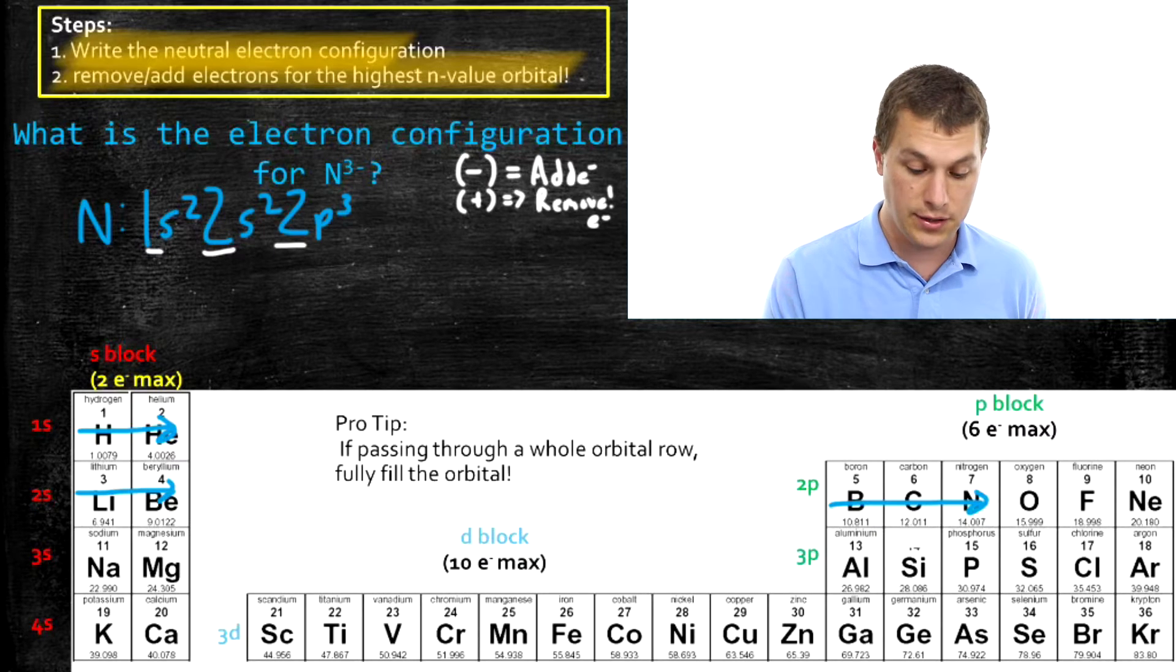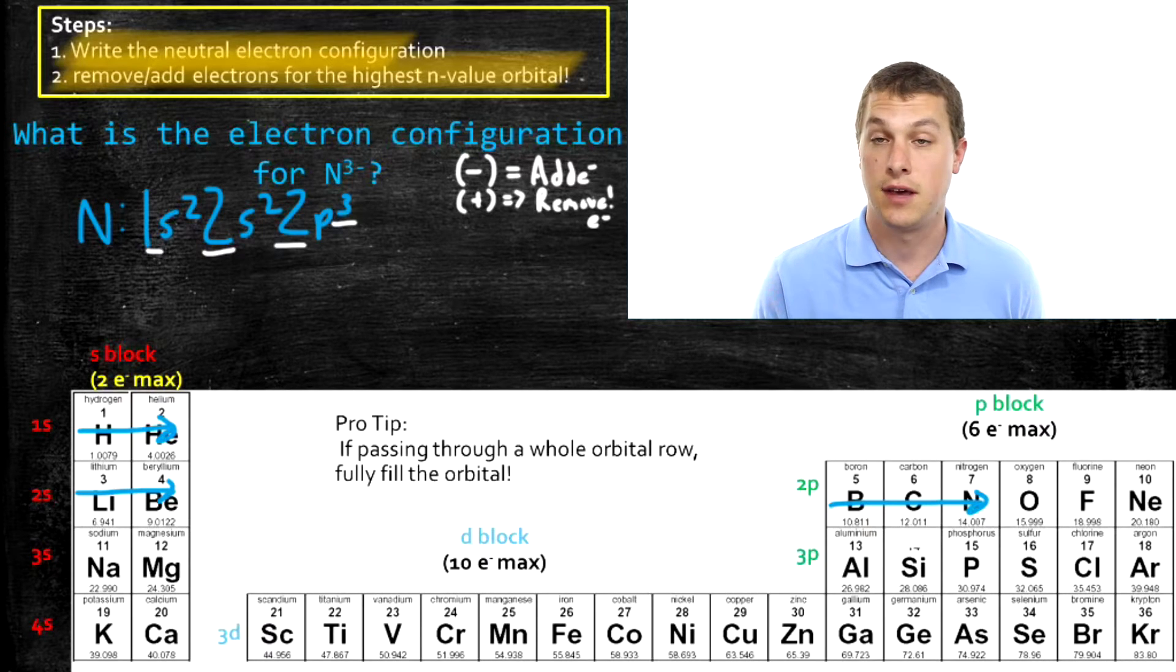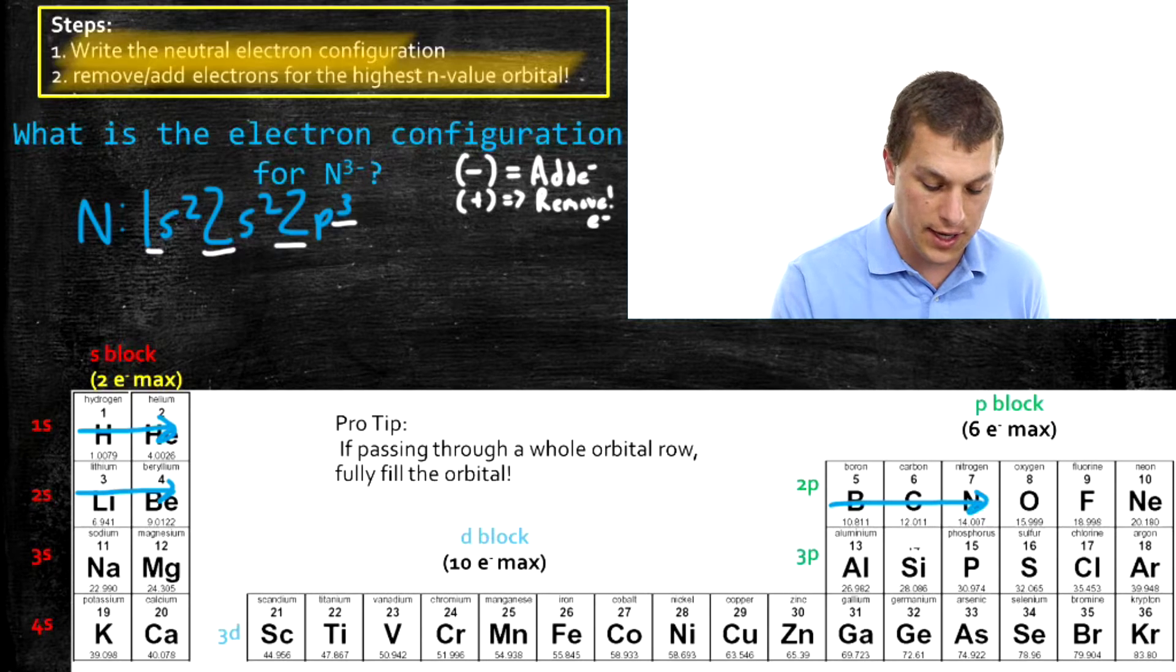And all we're going to do is add three electrons. So if we look at the 2p orbital, it can hold up to six electrons. Right now it only has three. So what we're going to do is we're going to add three more electrons to that.